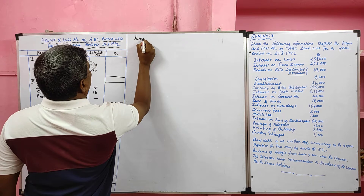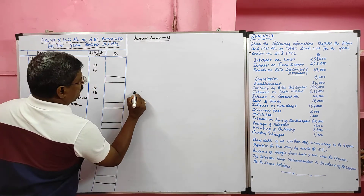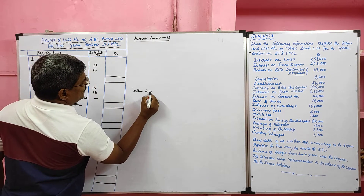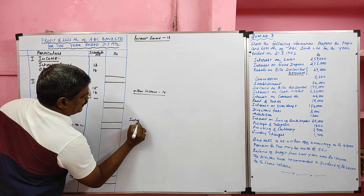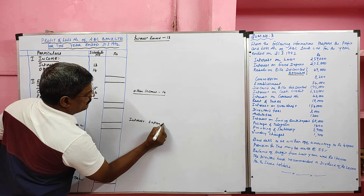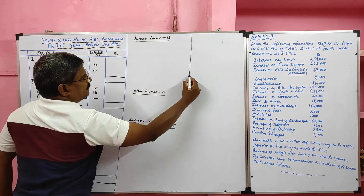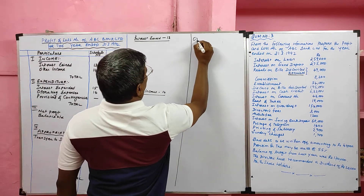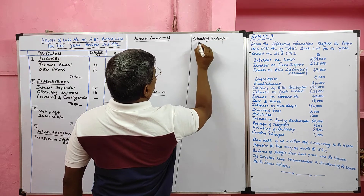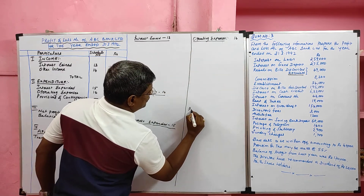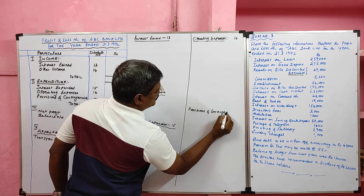The format includes: Schedule 13 — Interest Earned; Schedule 14 — Other Income; Schedule 15 — Interest Expended; Schedule 16 — Operating Expenses; and Provisions and Contingencies, which has no separate schedule number.